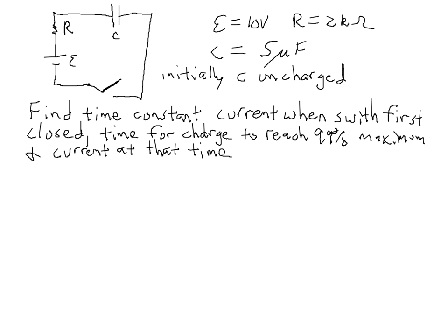The things that we're going to solve for in this problem are the time constant, the current when the switch is first closed, the time for the charge on the capacitor to reach 99% of its maximum value, and the current at that time.